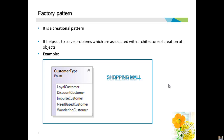Next are impulse customers — they do not have a particular item at the top of their to-do list but come into the store on a whim and purchase what seems good at that point in time. Then there are need-based customers who have a specific intention to buy a particular item, and only then will they turn up to the shopping mall. Finally, wandering customers have no specific need or desire in mind — they just want a sense of experience and socializing.